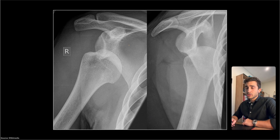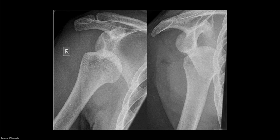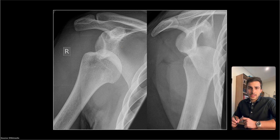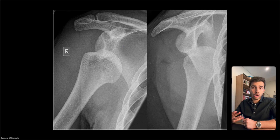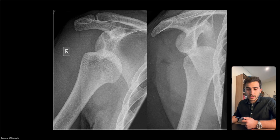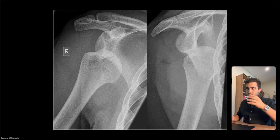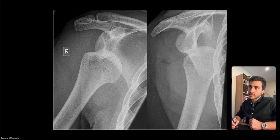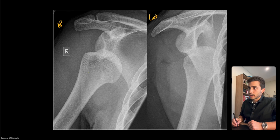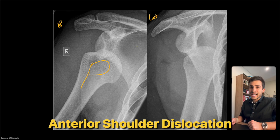Let's look at some examples. Case one — what do you think it is, posterior or anterior dislocation? So we said that if it was an anterior dislocation, it would look like a P or Q because the anterior is the more common one and it looks like external rotation. And if it was internal rotation, it would look like the light bulb sign. This is on the AP view of a right shoulder. If you look at the humeral head, it almost looks like a P — so this would be an anterior shoulder dislocation because it looks like an externally rotated shoulder.